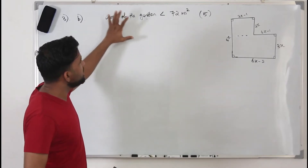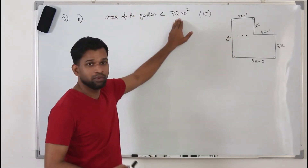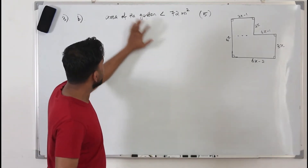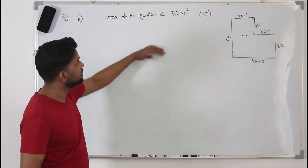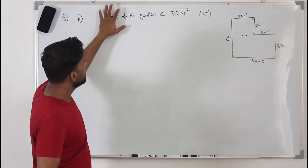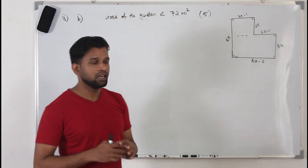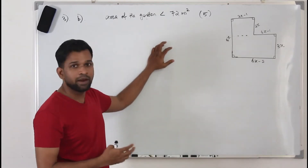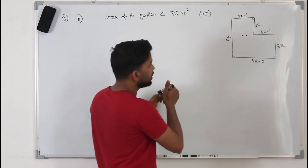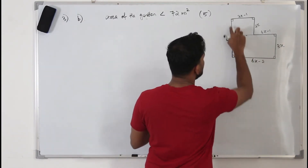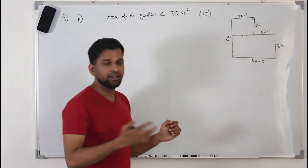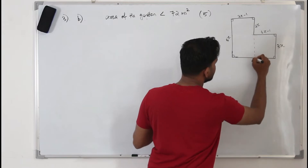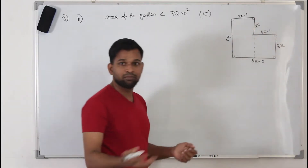Part B says: if the area of the garden is less than 72 square meters, form a quadratic inequality and solve it. This question is worth 5 marks, so we need to do a bit more work. Since it's an irregular shape — a combination of two or more basic shapes — we divide it into basic shapes to find the area. I'm going to draw a line to split the figure into two rectangles and find the area of each separately.